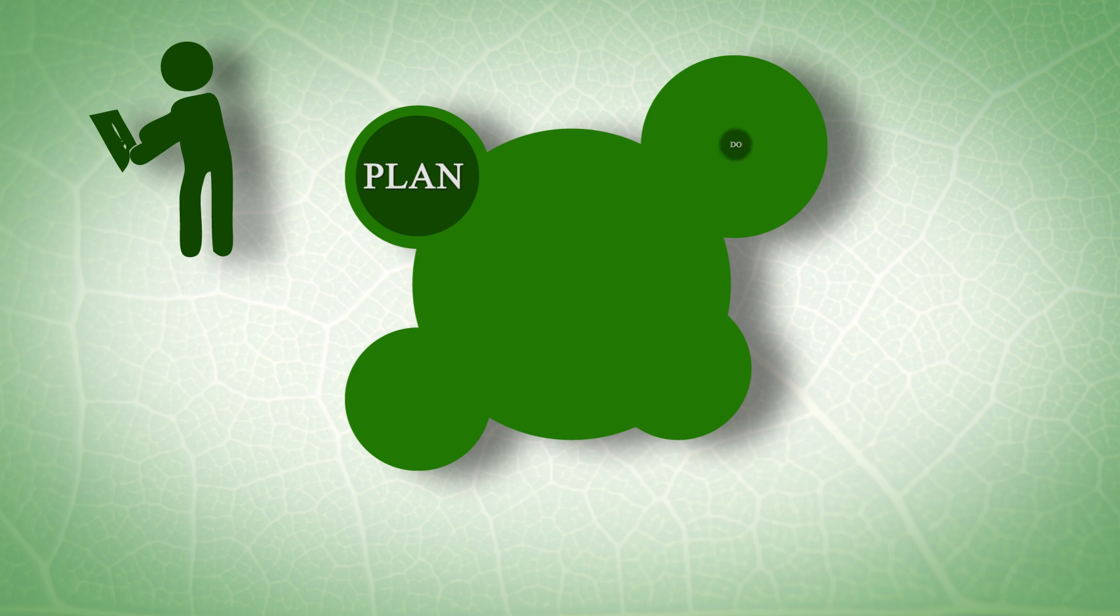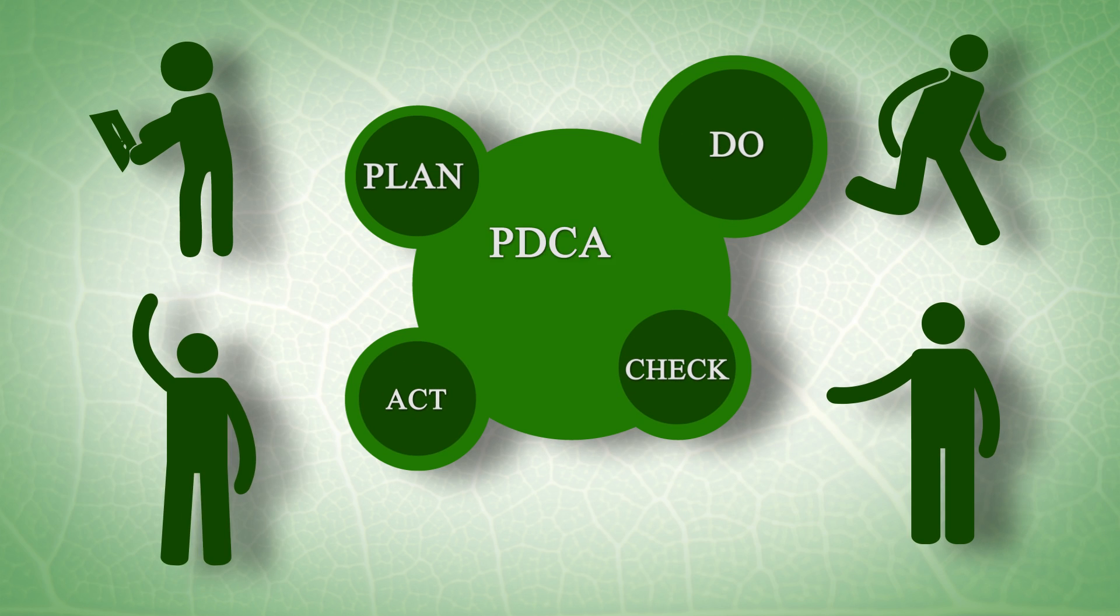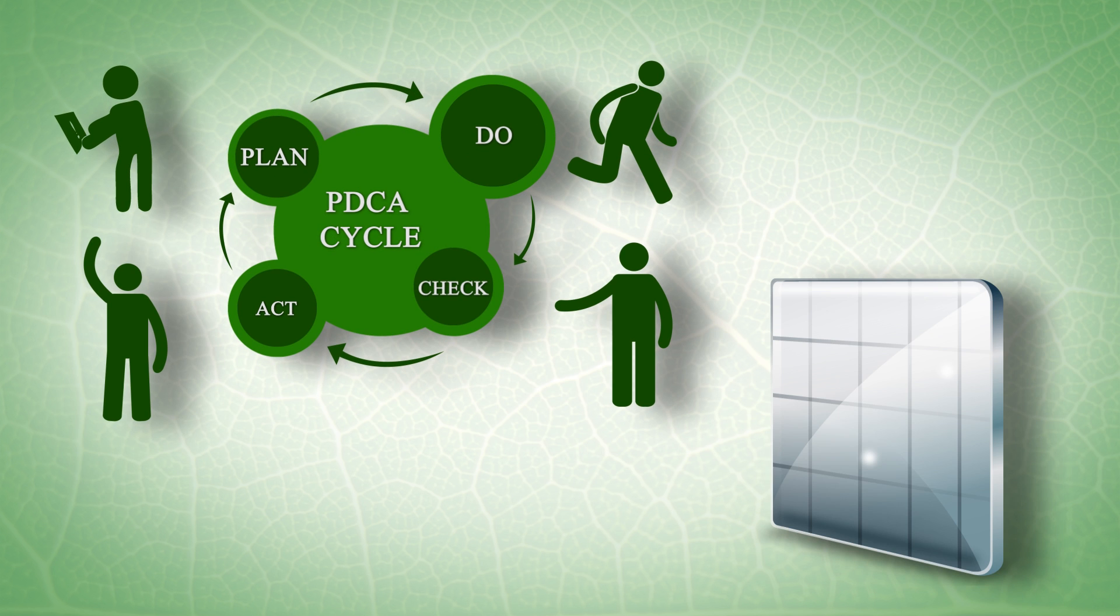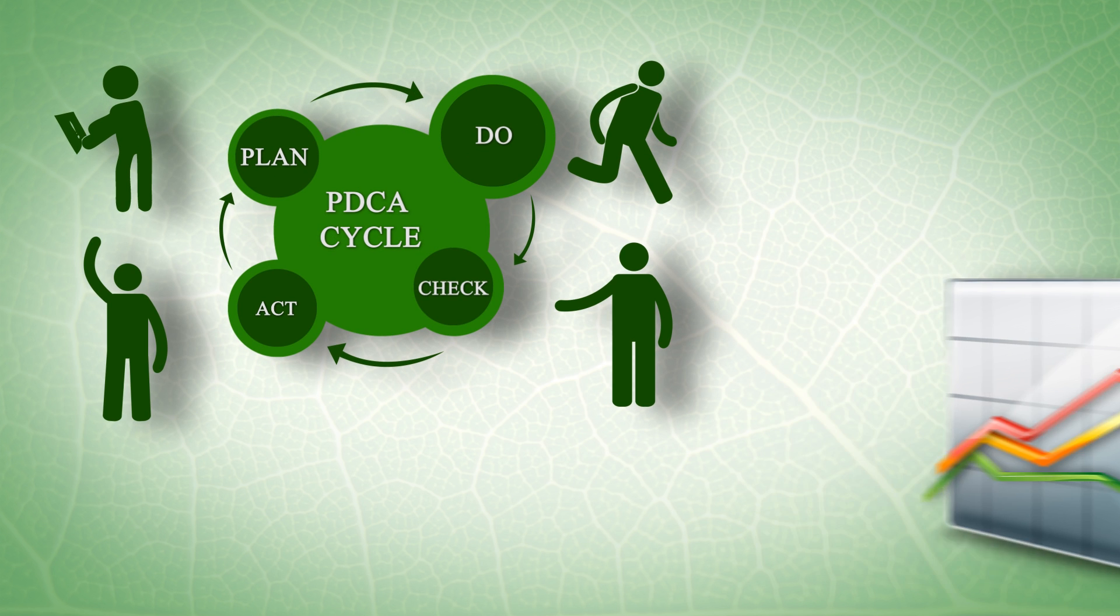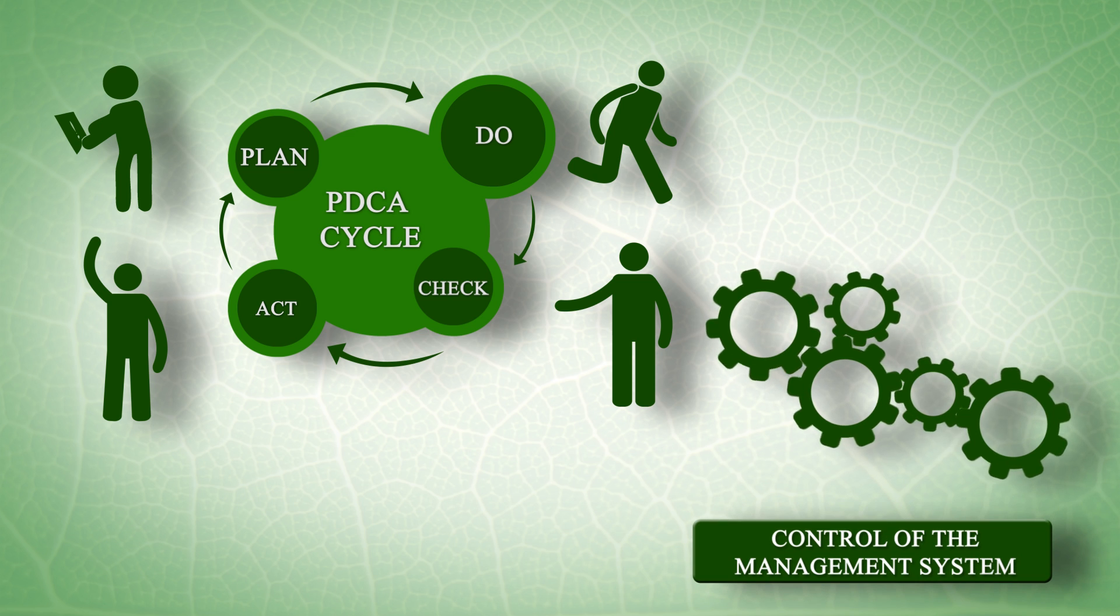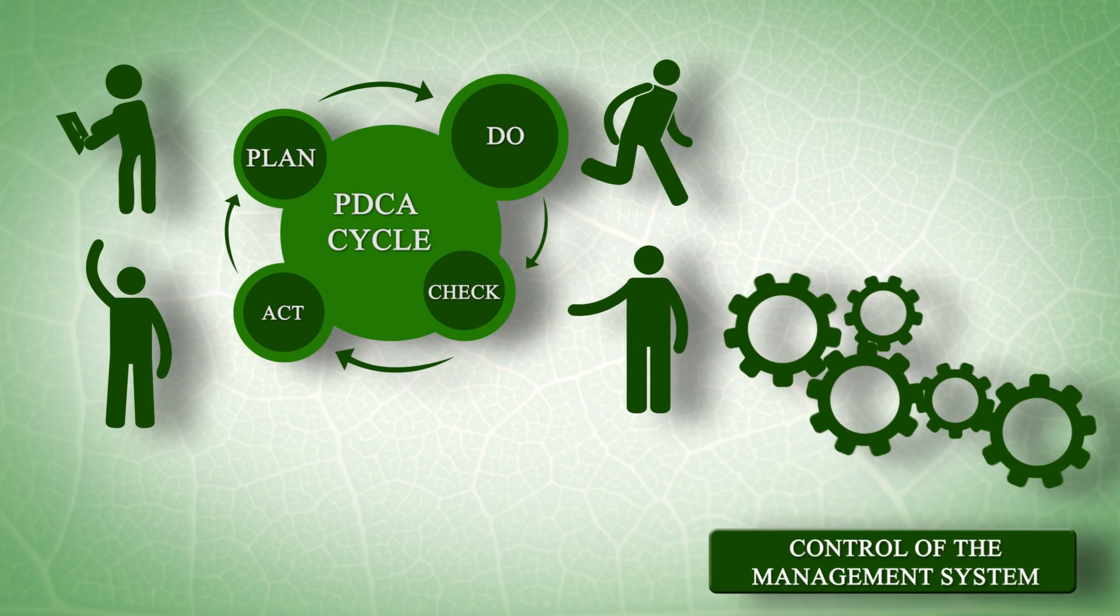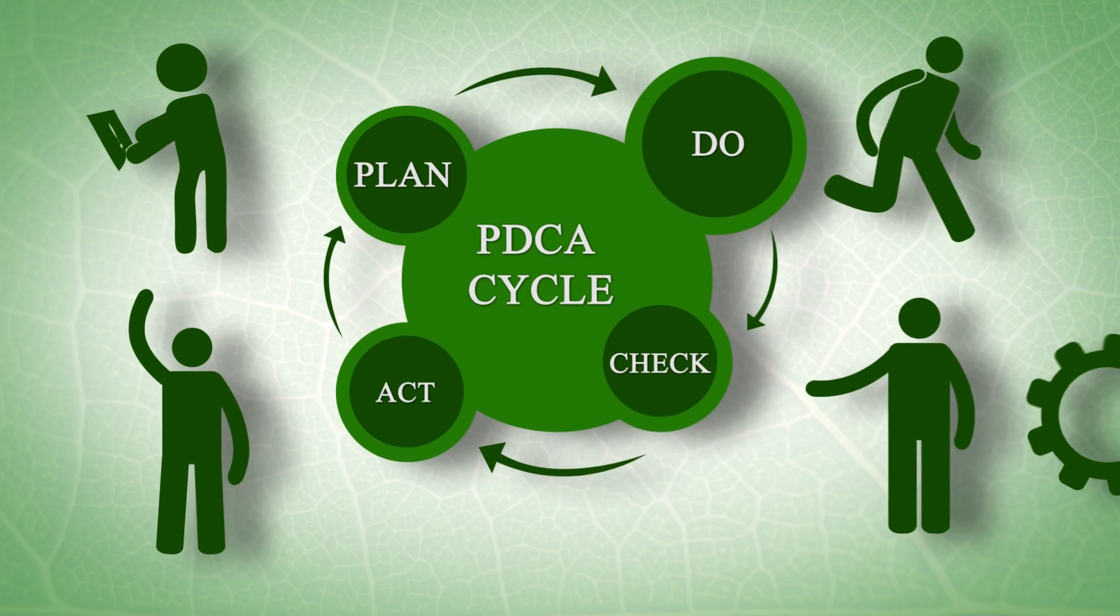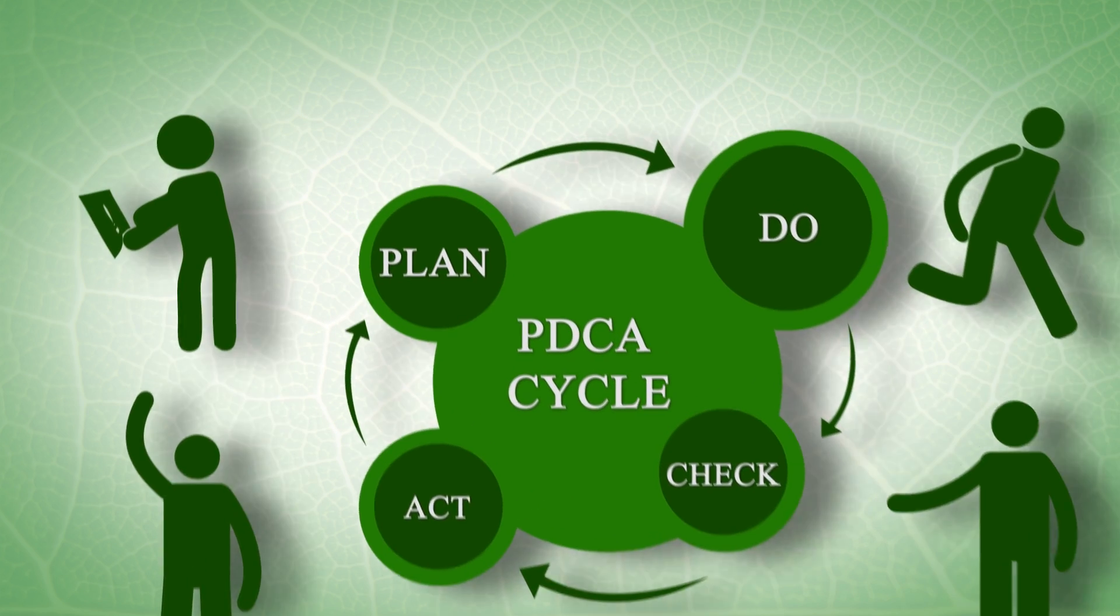The Plan-Do-Check-Act PDCA cycle is the foundation of all ISO management system standards. The cycle ensures development, continuous improvement and control of the management system in question. It is a simple tool that ensures constant monitoring of your organisation's effectiveness. It consists of the following.